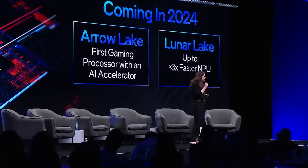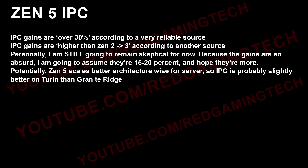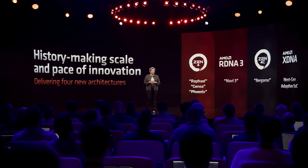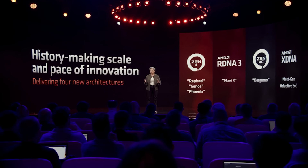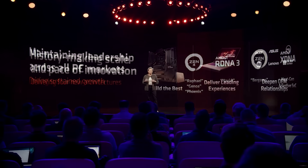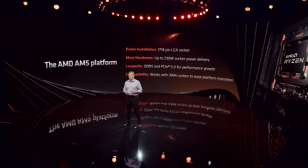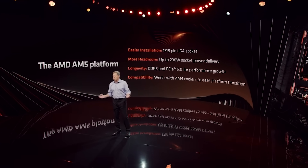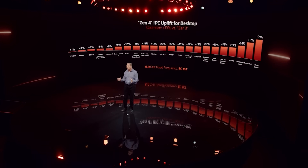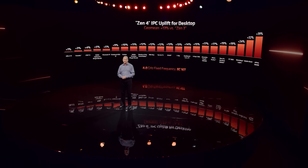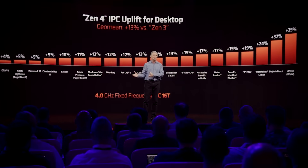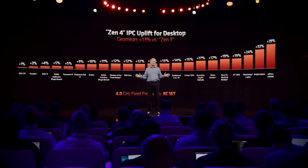I did leak some stuff regarding Zen 5, and frankly I'm getting more confident that the Zen 5 stuff I leaked — in terms of the absolutely crazy IPC gains, like 30% — I think that's true. If that is accurate, it's just going to be absolutely nuts how performant those processors are. I think there are going to be some very solid leaks in the next month or two for the AM5 platform. I still have some level of scepticism because those IPC numbers are just so crazy high, but if they are true, it's absolutely going to be nuts for AMD. And who knows what we'll be expecting with the X3D variants.